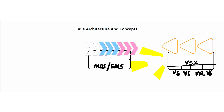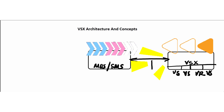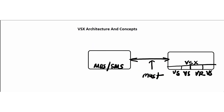The communication between the management server and the VSX is always required. The SMS or MDS — multi-domain server or security management server — must communicate with the VSX gateway. Basically, the management server connects to the VSX gateway and provides provisioning and configuration services for the virtual devices located on the VSX gateway.